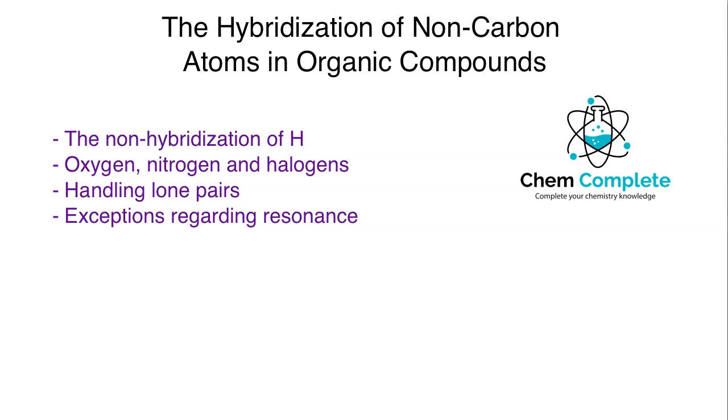So we've really focused on carbon in the first two lessons in this series. We looked at SP3, SP2, and SP, and now I want to take a look at some of the very common atoms that appear in organic structures aside from carbon and how we handle their hybridization in different scenarios.